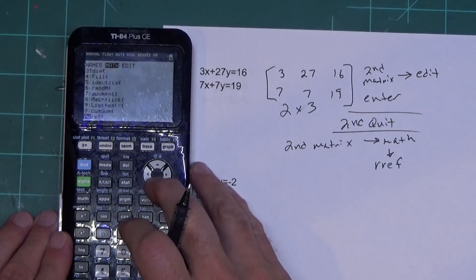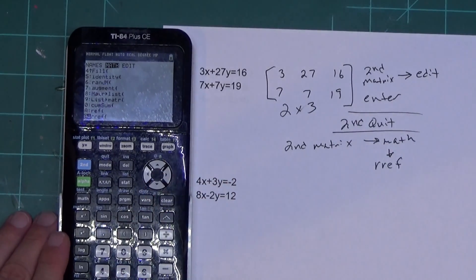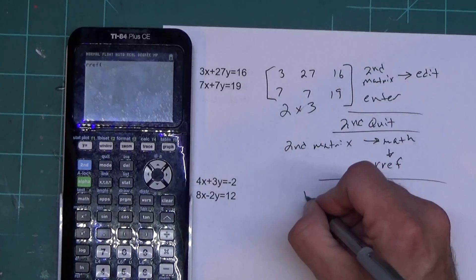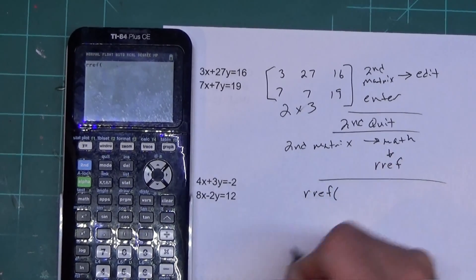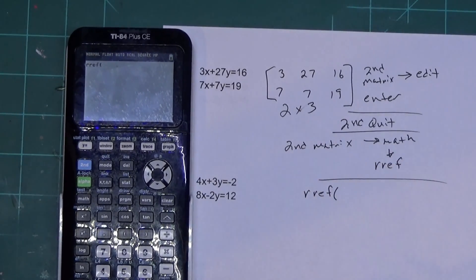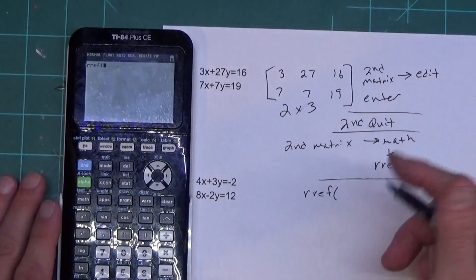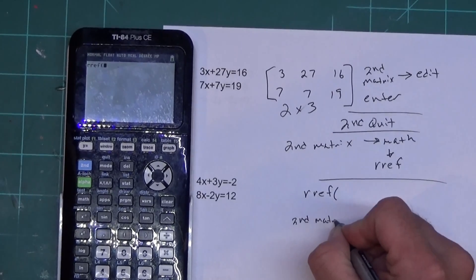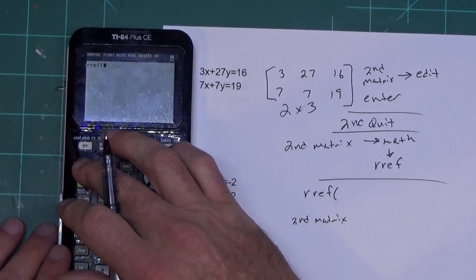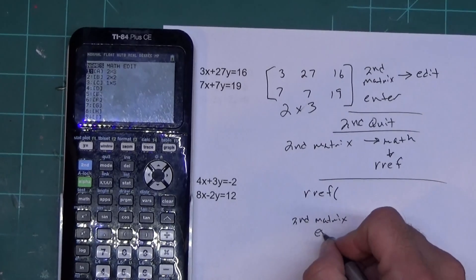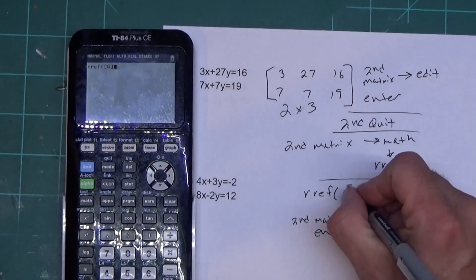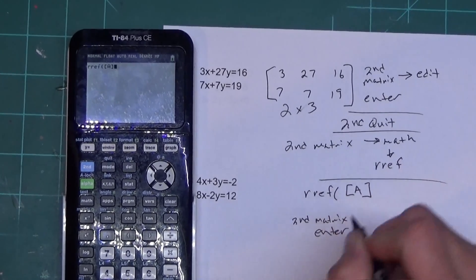And we go down to RREF. So we're going to scroll down to RREF. And now that we're on RREF we press enter. This puts RREF on the screen. And we still have to tell the calculator what to work with. So we're going to have to do again is hit second matrix.